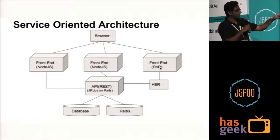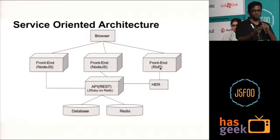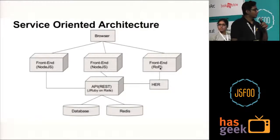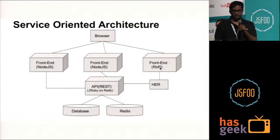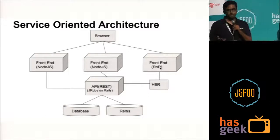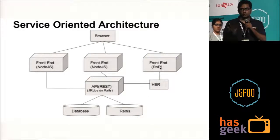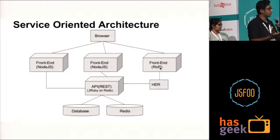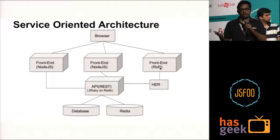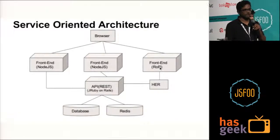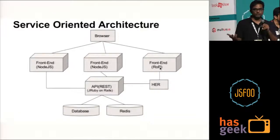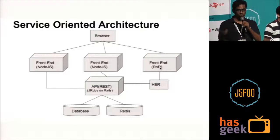The current Rails platform accesses the API through a gem called 'her'. What 'her' allows us to do on the Rails front end is access the API using models. For example, if you have a user model on your API, you can access users on the front end using that same model — like user.where(name: ...) or user.where(email: ...) — and 'her' does the magic and gives you all the objects you need.